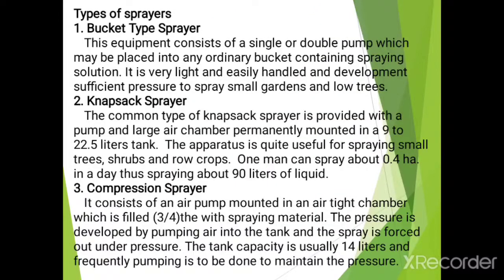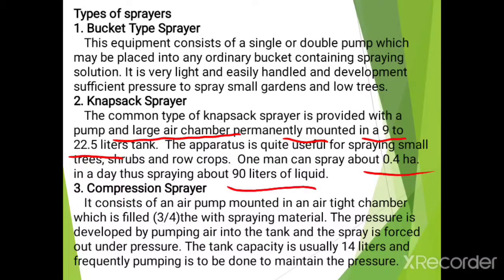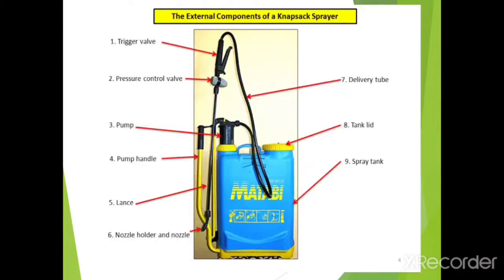The next type of sprayer is the knapsack sprayer. This is the common type of sprayer provided with a pump and large air chamber permanently mounted in a 9 to 22.5 litre tank. The apparatus is quite useful for spraying small trees, shrubs, and row crops. One man can spray about 0.4 hectare in a day, spraying about 90 litres of liquid. It is called knapsack sprayer because we carry it like a bag on our back.